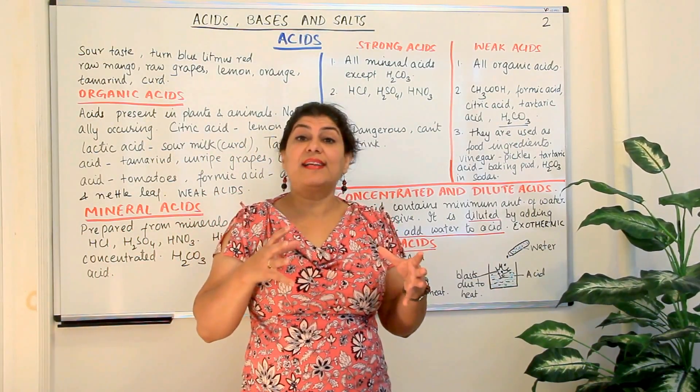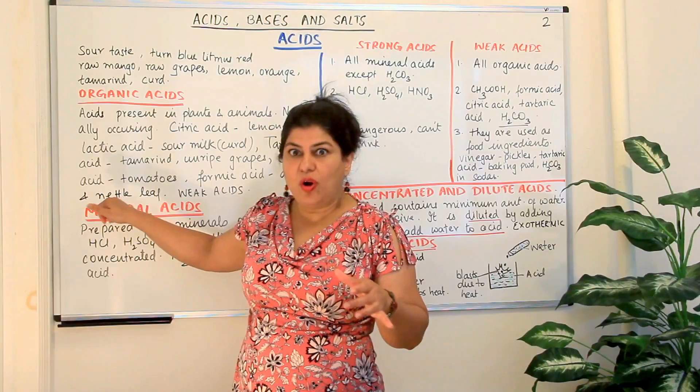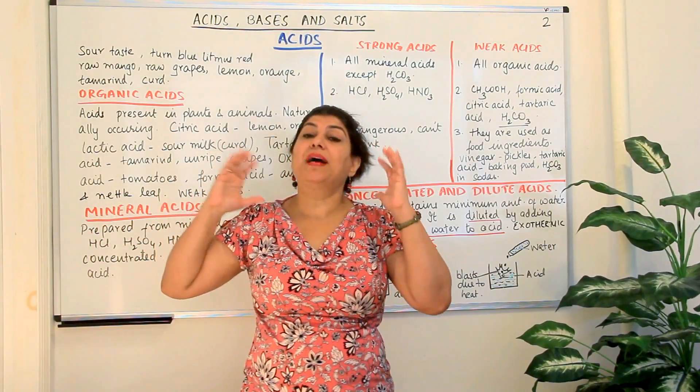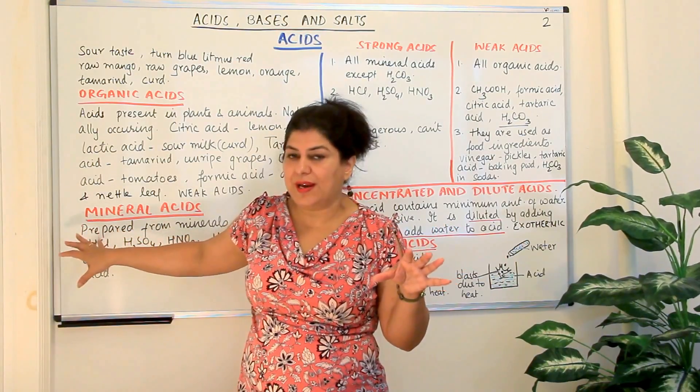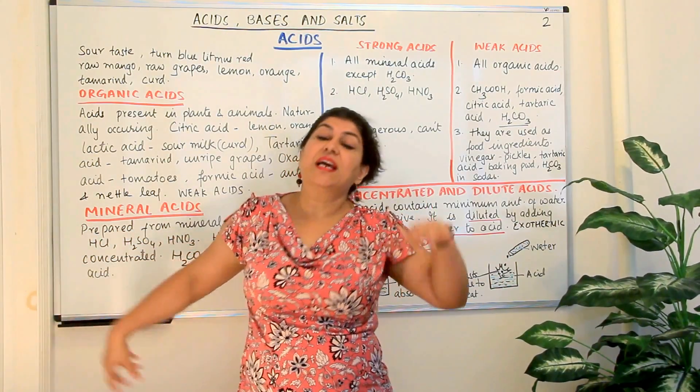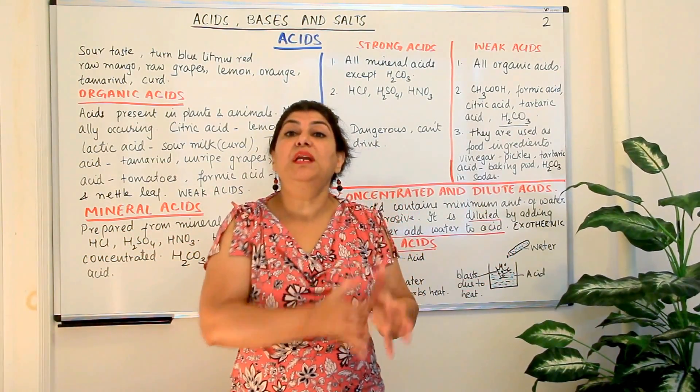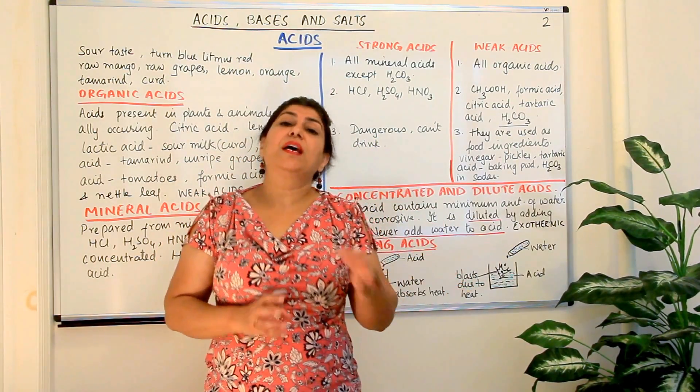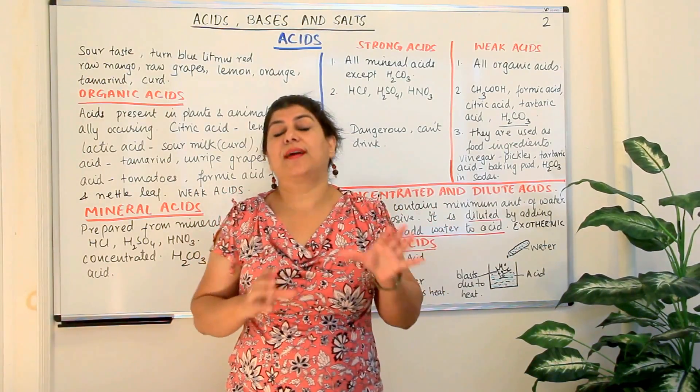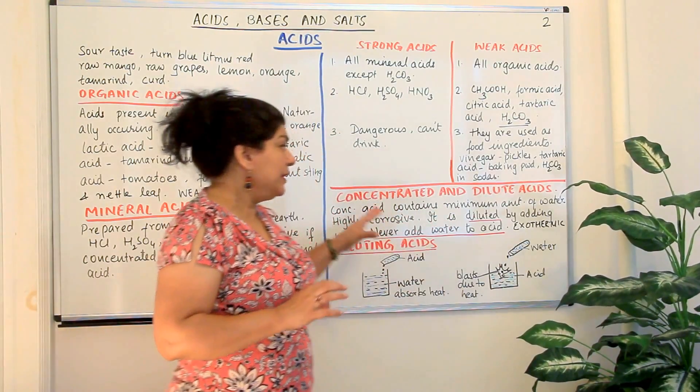And concentrated acids, therefore, if they are strong acids, if they are mineral acids, you can imagine concentrated mineral acids. One, it is a mineral acid. It is strong. On top of it, it is concentrated. It has minimum amount of water. That kind of acid is the most corrosive, is the most dangerous kind of an acid. Therefore, you cannot, you would like to avoid using acids in their concentrated form.